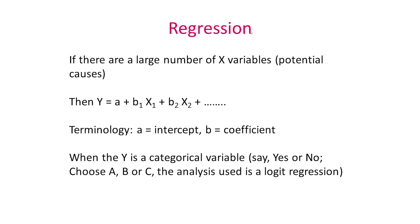Now, if in fact there are a large number of x variables, potential causes, then the same regression equation will look like this. Y will now look like some constant a, plus b1 times x1, plus b2 times x2, plus b3 times x3, and so on and so forth. So this is the result, till such time that you have exhausted all of your potential cause variables or your x's. A again, as we said, is the intercept. B is called the coefficient.